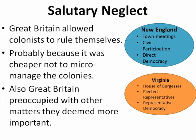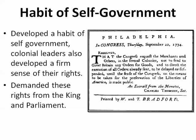Salutary Neglect refers to the behavior that Great Britain had toward the colonies — they neglected the colonies, didn't stand over them and pursue them aggressively, and even the Navigation Acts were not strictly enforced. So the colonists developed types of government. In New England they had town meetings with direct democracy; in Virginia and the southern colonies they had a House of Burgesses, a representative republican form of government. The people were used to governing themselves — they acquired a habit of self-government.